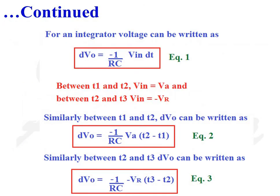Now coming to the analysis. For an integrator, change in voltage can be written as dV0 equals minus 1 divided by RC multiplied by Vin dt. Between T1 and T2, Vin equals analog input signal VA. Therefore, dV0 equals minus 1 by RC multiplied by VA multiplied by (T2 minus T1). Between time instances T2 and T3, dV0 can be written as minus 1 by RC multiplied by minus VR multiplied by (T3 minus T2).